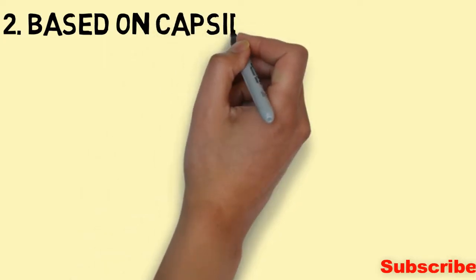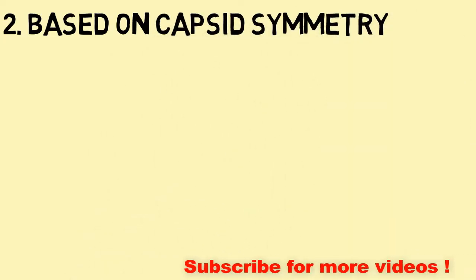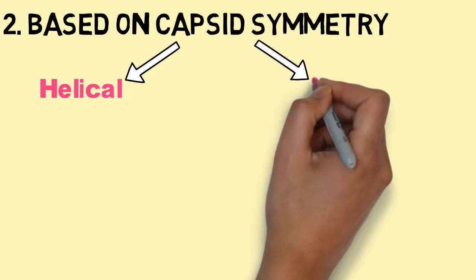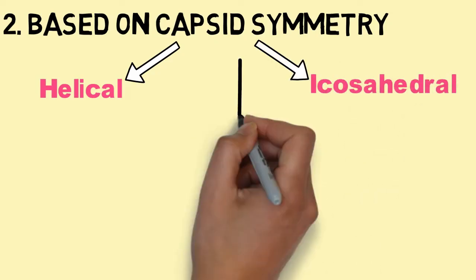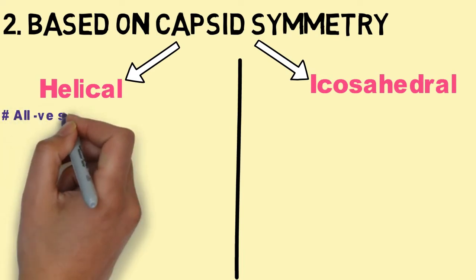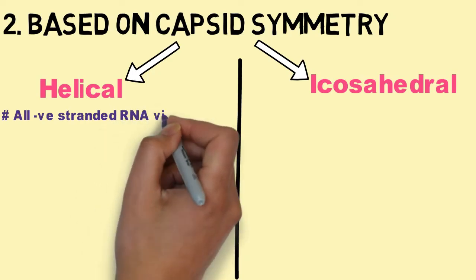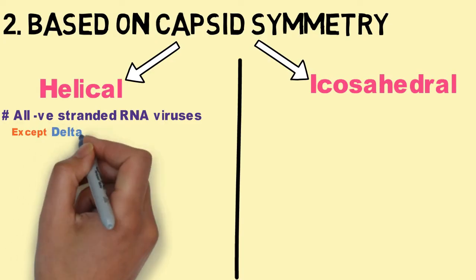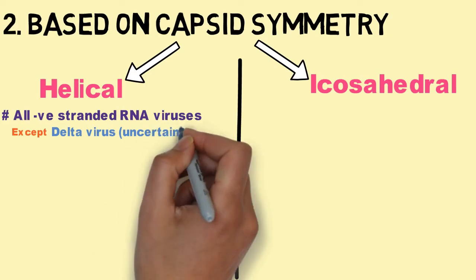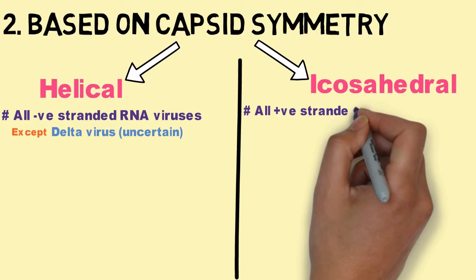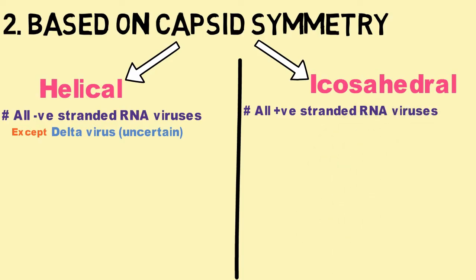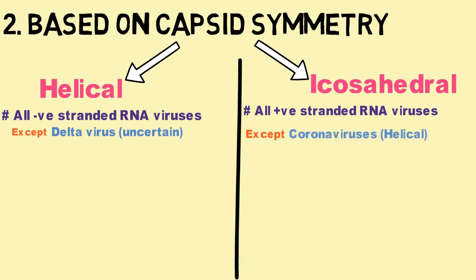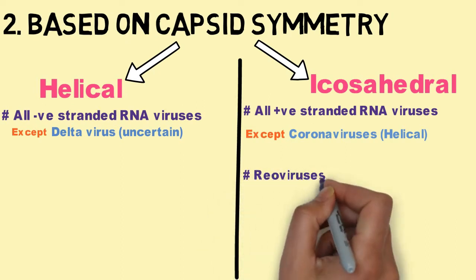Based on capsid symmetry, RNA viruses can be either helical or icosahedral. All negative-stranded RNA viruses are helical, except Delta virus. All positive-stranded RNA viruses have icosahedral capsid symmetry, except Coronavirus, which has helical capsid symmetry. Reoviruses also have icosahedral symmetry.